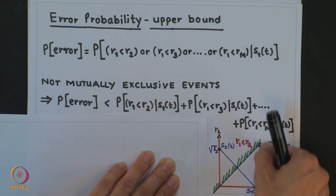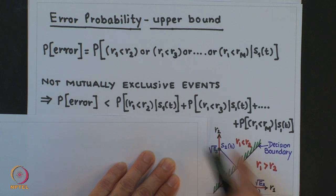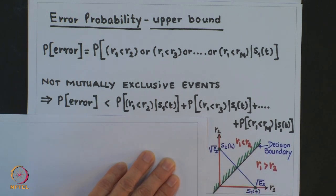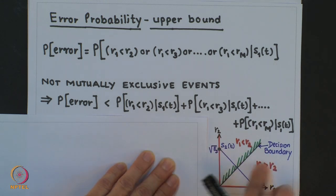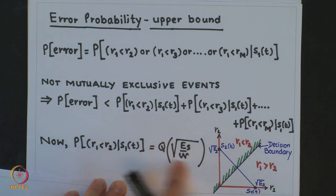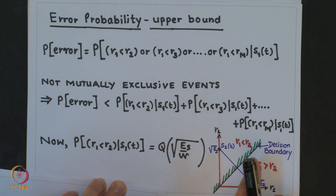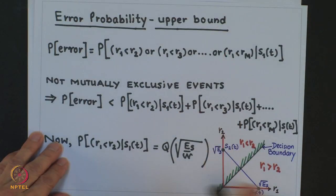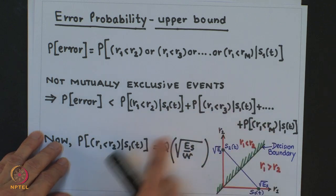For these two signals, the region R_1 < R_2 corresponds to one side of the decision boundary, and R_1 > R_2 to the other. The probability of error for this case equals Q(d/√(N₀)) where d is the distance, which reduces to Q(√(E_s/(N₀/2))). Since all signals are orthogonal, each of the M−1 terms is equal, so the union bound gives P_error < (M−1) · Q(√(E_s/(N₀/2))), which we further upper bound as M times this Q function.